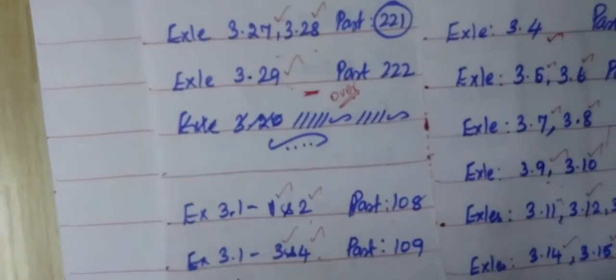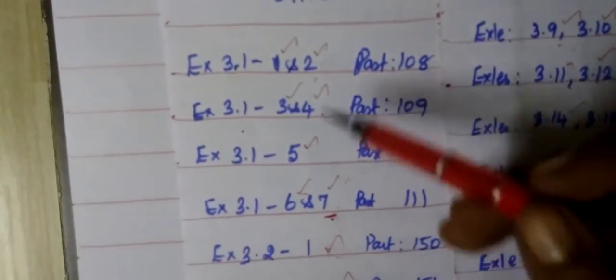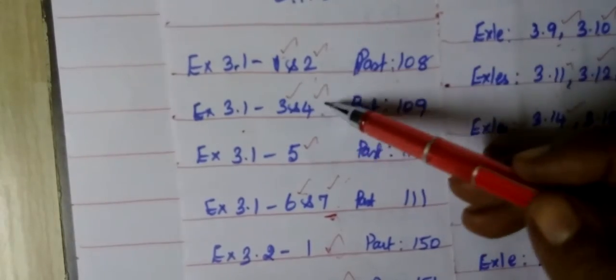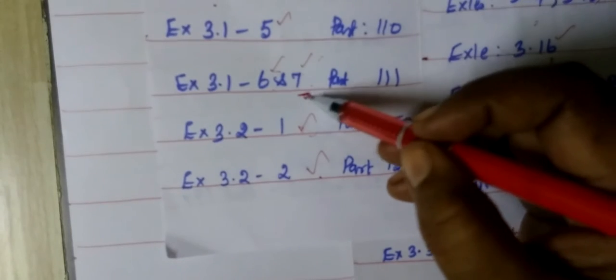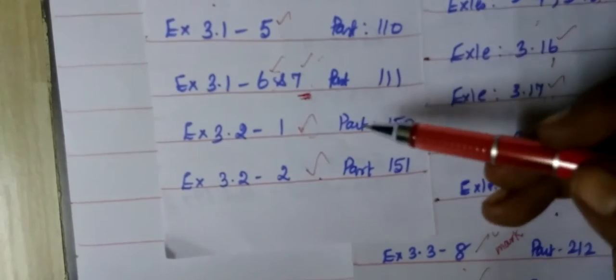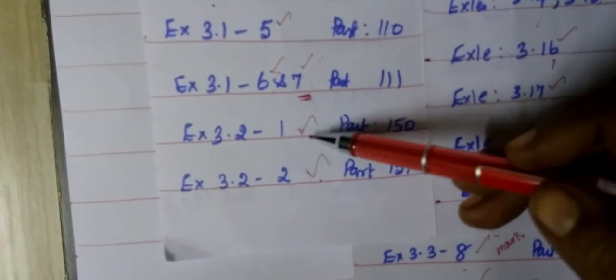Now, coming to the exercise 3.1 level. Question number 1, 2, 3, 4, 5, then 6, 7. So, after this exercise 3.1 over. Then next exercise 3.2 level.